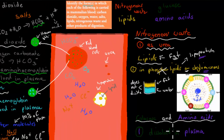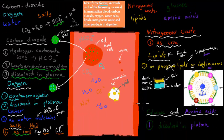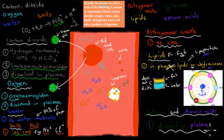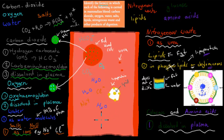The last products are glucose and amino acids. These come from the small intestine and are easy to transport — they simply dissolve in plasma and swim around in it.